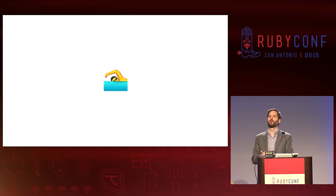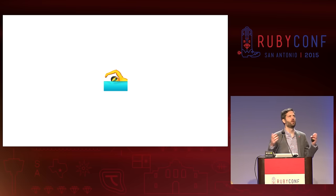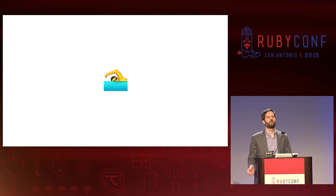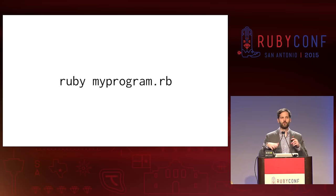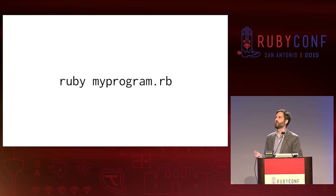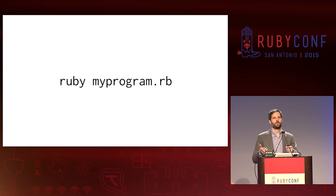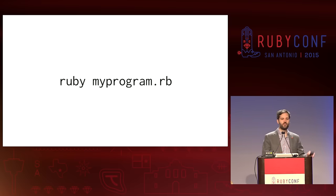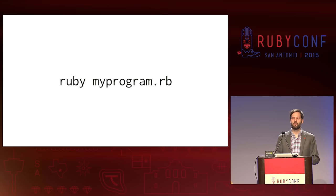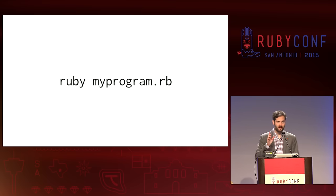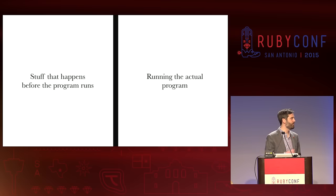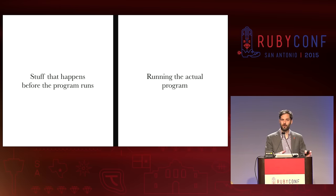As I was thinking about this — we're going to do some ahead of time compiling — what does it mean when we do Ruby and run my program? I was sitting there thinking about it. When we think about running a Ruby program, we can actually break that down into two distinct steps. There's two distinct things that happen: the stuff that happens before the program runs, and then running the actual program.